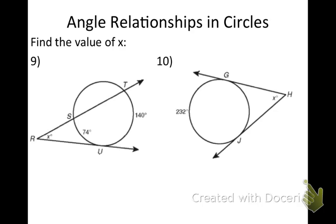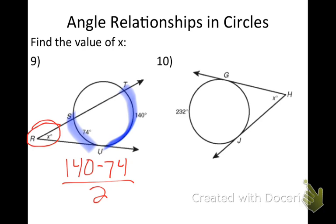Let's look at number nine here. Find the value of X. So angles on the outside. Anytime you have an angle on the outside, what are you going to do with your two arcs now? You're going to subtract them. So I take 140 minus 74, and then divide it by 2. So 140 minus 74 gets me 66. Divide that by 2, and my angle is 33 degrees.